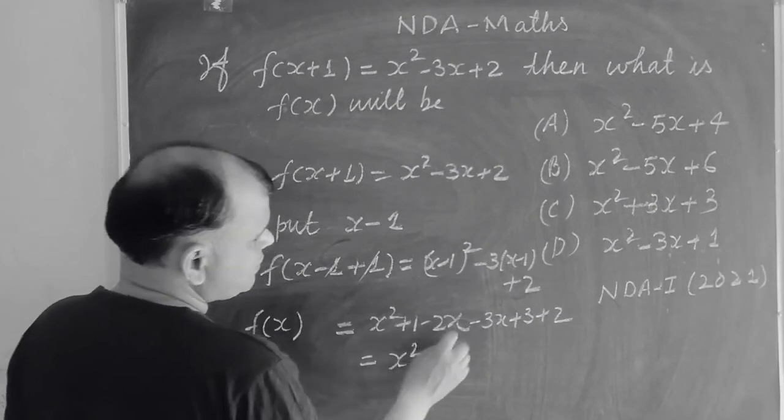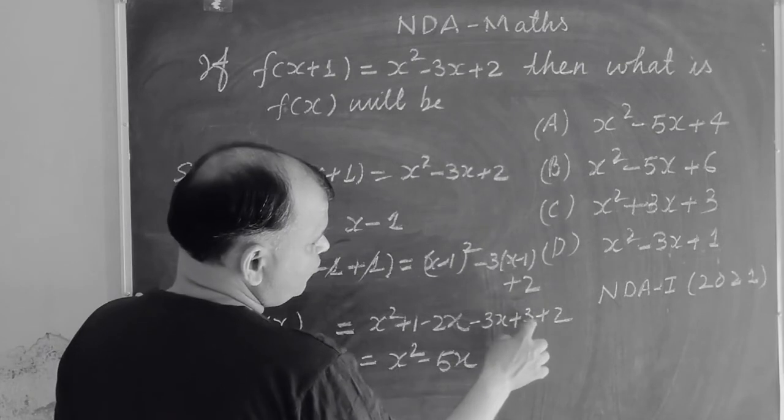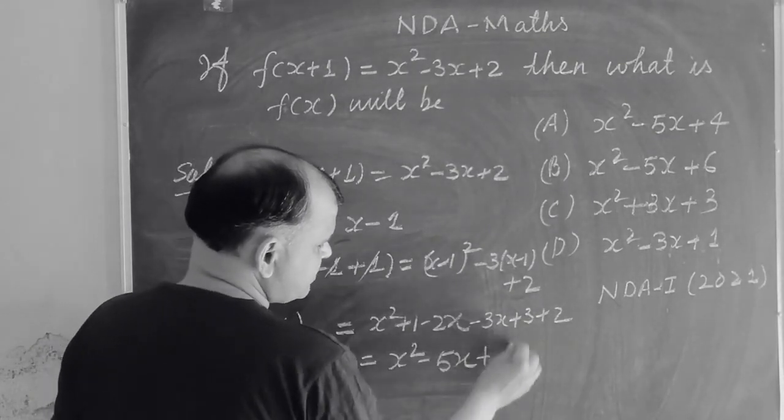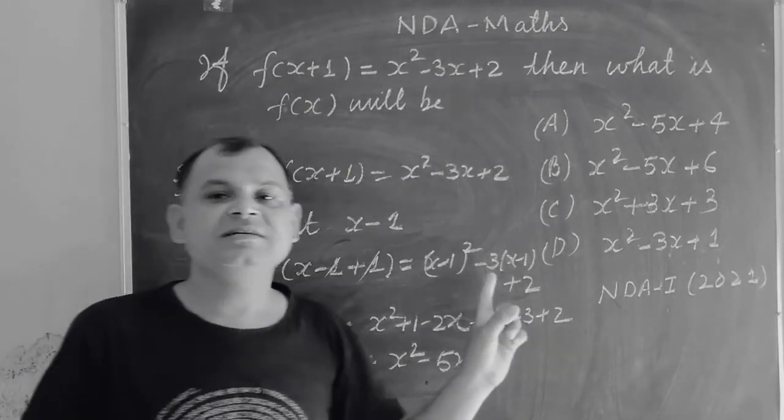So x² minus 2x minus 3x equals x² minus 5x. Then 1 plus 3 plus 2 equals 6. So we get x² minus 5x plus 6.